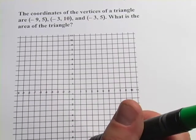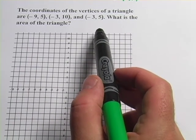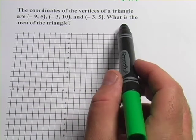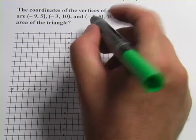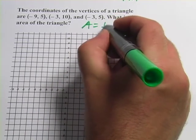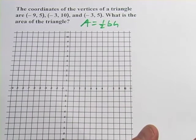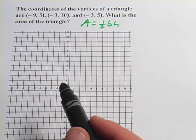Now we've got a slightly harder problem here. It says the coordinates of the vertices of a triangle are negative 9, 5, negative 3, 10, and negative 3, 5. What is the area of the triangle? We're still going to use our formula area equals one-half base times height, but we don't know what the base and the height are here. We're going to have to figure that out from plotting this triangle on the graph.